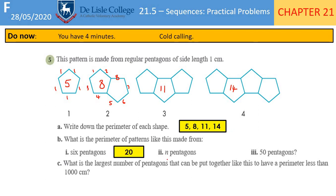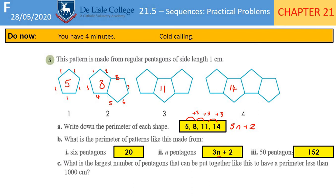For n pentagons, that's the nth term rule. Adding 3 each time, so we start with 3n. If n is 1, 3 times 1 is 3, add 2 gets us 5 — so the rule is 3n + 2. For 50 pentagons, substitute 50 in: 3 times 50 is 150, plus 2 is 152 centimetres. What's the largest number of pentagons with a perimeter of less than 1000 cm? Solve 3n + 2 < 1000. Subtract 2, then divide by 3 to get n = 332.6 recurring. We don't round up — the answer is 332.